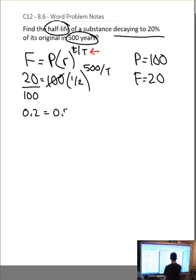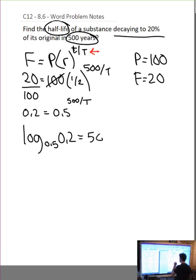I'm going to divide both sides by 100. One half is just 0.5. So, now I need to turn it into log form. So, log base 0.5 of 0.2 equals the thing we're logging, equals the exponent.